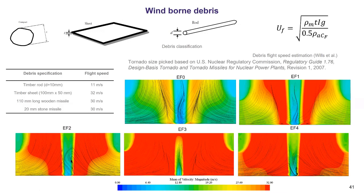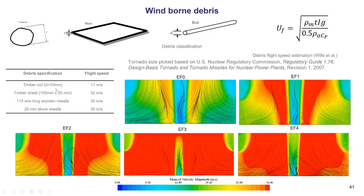The beauty of computational models compared to experimental is that they give you information on a continuous space. We can produce wind field contour lines describing different EF tornado intensities, as well characterized by the US Nuclear Regulatory Commission. If you have different sources of wind-borne debris — compact objects representing rocks, sheathing, and rods — and we know their flight velocities, then when you have the wind field you can see that EF3 will pick up even the most difficult debris. This kind of wind field availability can also guide wind-borne debris risk assessment.